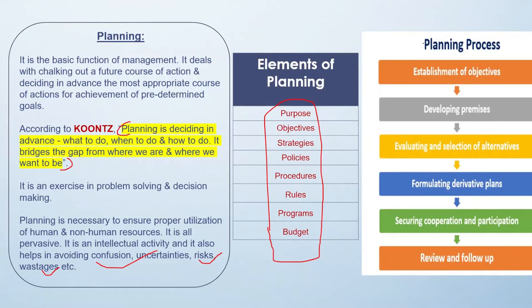The planning process is a step-by-step structured process. The first step is establishment of objectives, then developing premises. When we start, we have a target we need to reach, so we plan for that — that is the objective. If we have a concrete objective, then only we can establish a perfect plan. So be sure about the objective before going for planning, then develop premises.